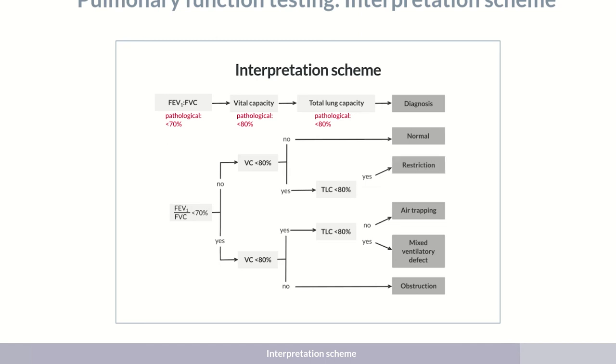If, however, the total lung capacity is within the normal range, air trapping is present. In this case, the reduced vital capacity reflects an increased residual volume as a result of hyperinflation.